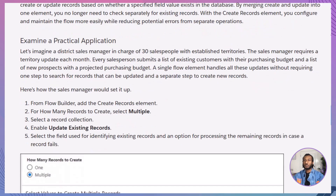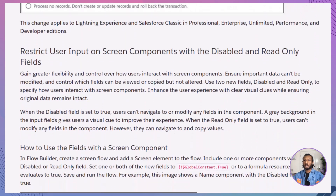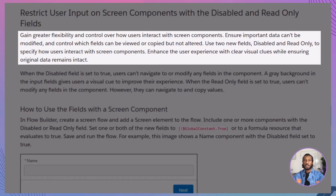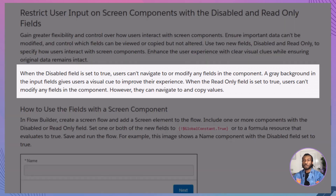Now, let's talk about field control in Flow Screens. Sometimes you want users to see data without being able to edit it, or you want to clearly indicate that a field is locked. Now, with disabled and read-only fields, you can do exactly that. What's the difference? A disabled field can't be clicked, navigated, or edited. Read-only: the field can't be edited, but users can copy the value. And yes, these visual cues are clearly displayed, like a greyed-out background, so users know exactly what's interactive and what's not.